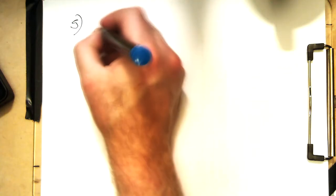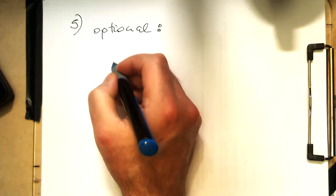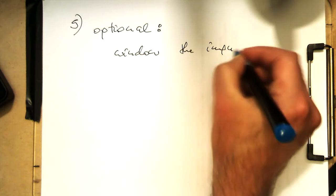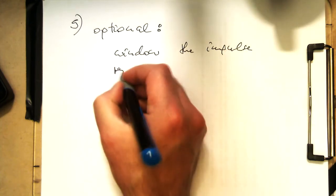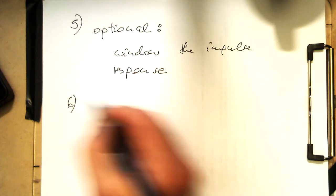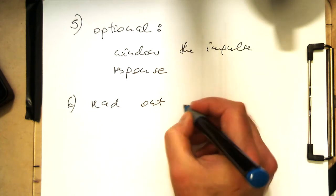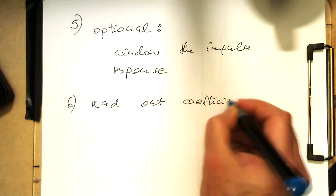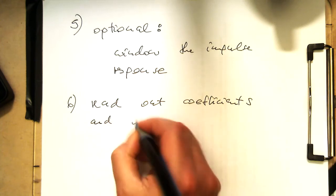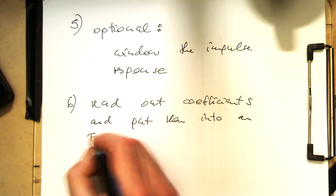So then five, optional: window the impulse response. Then six, read out coefficients and put them into an FIR filter.